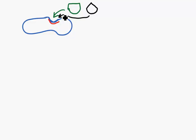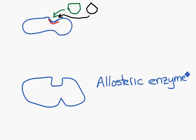However, we also have a second type of enzyme, totally different system, so I'll draw a different shape, like this, called an allosteric enzyme.